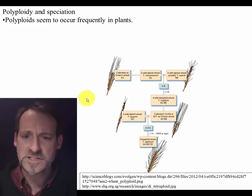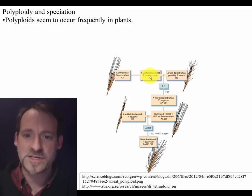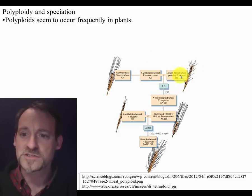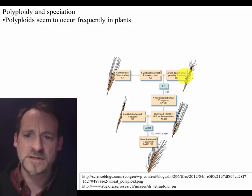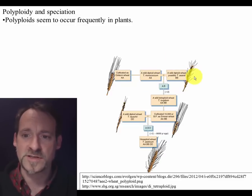So for example, wheat. What you used to have are these different species coexisting in the wild. This was Triticum monococcum and Triticum seersii — but then there was a polyploidy event.